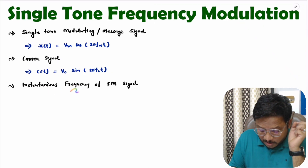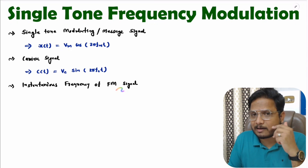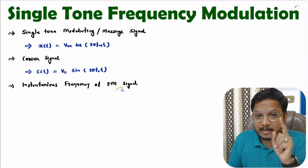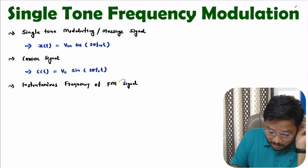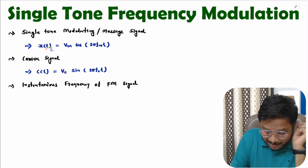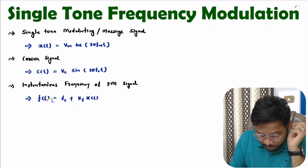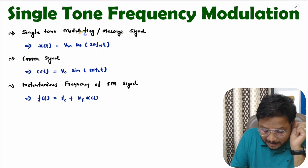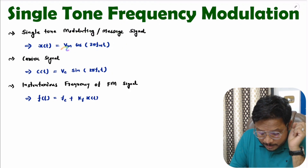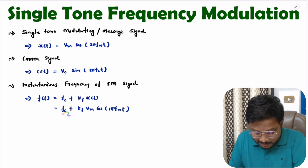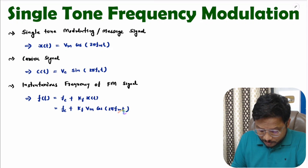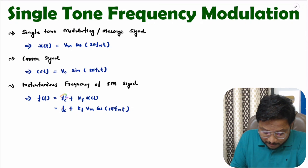In frequency modulation, the instantaneous frequency of the FM signal changes with respect to the message signal x(t). The instantaneous frequency is given by f(t) = fc + kf·x(t). Substituting x(t) = Vm·cos(2π·fm·t), we get f(t) = fc + kf·Vm·cos(2π·fm·t). Here, fc is the carrier frequency, which we see in the carrier signal.